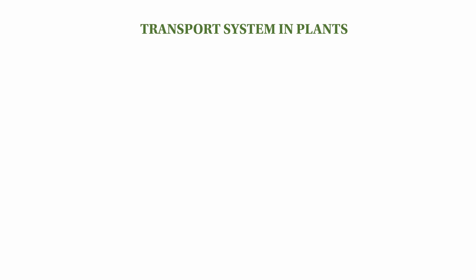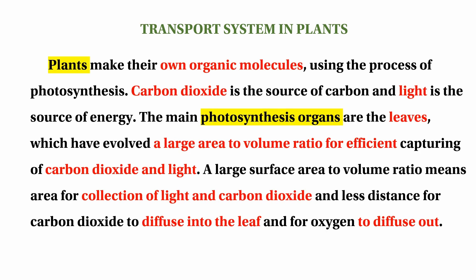The transport system in the plant. Plants make their own organic molecules. These organic molecules are used for nutrition. Organic molecules, including glucose sugar molecules, are produced through the conversion of carbon compounds.